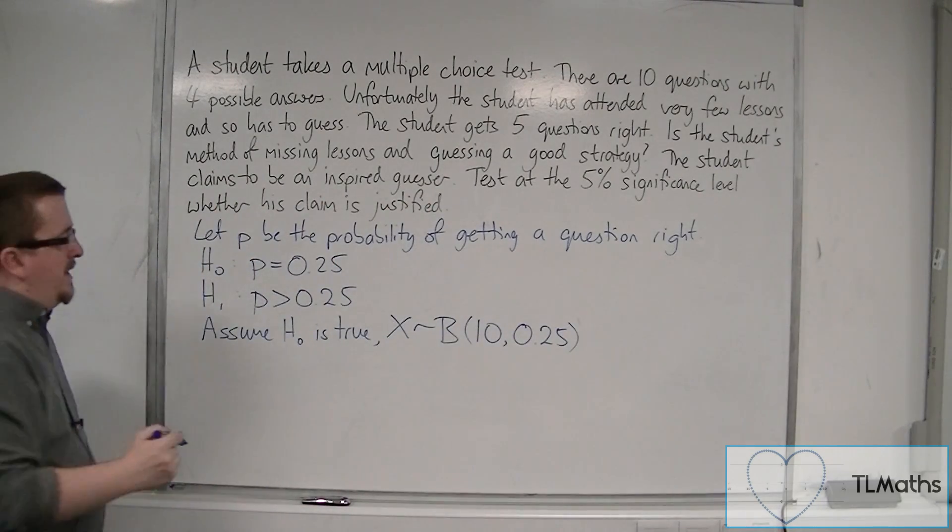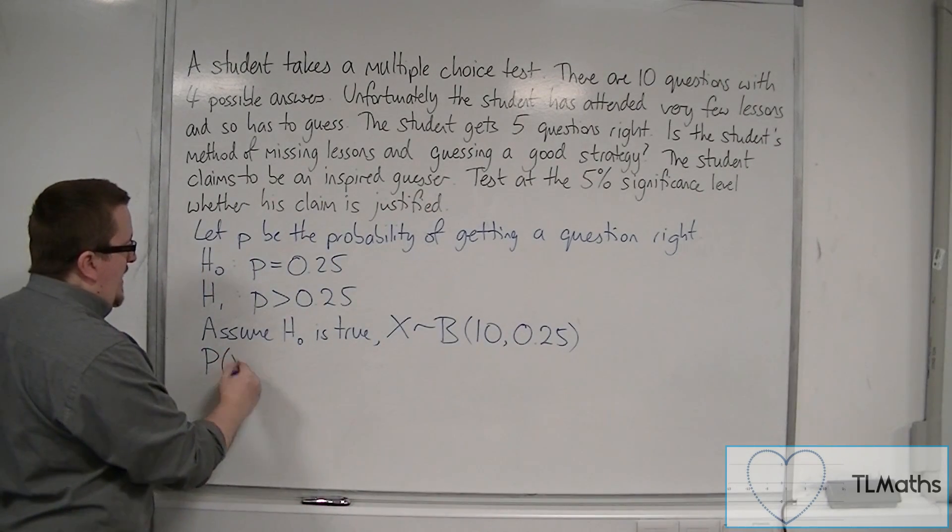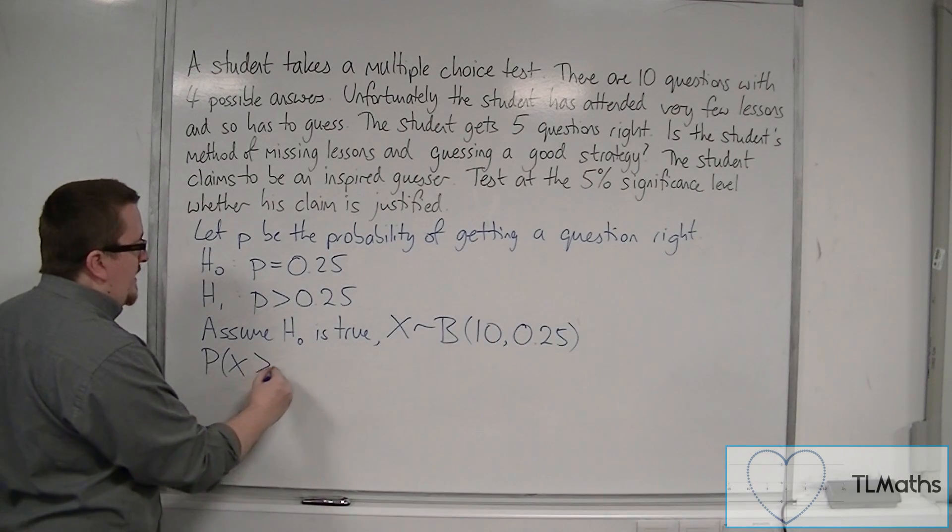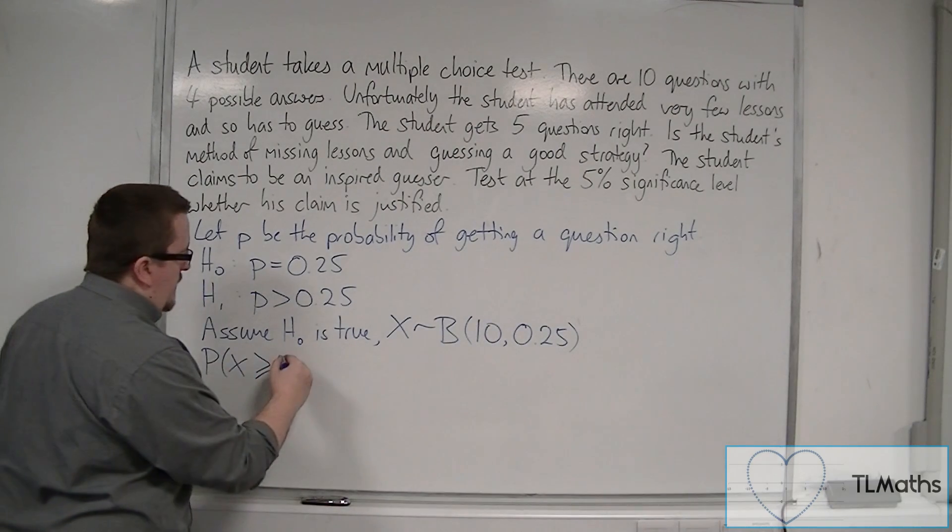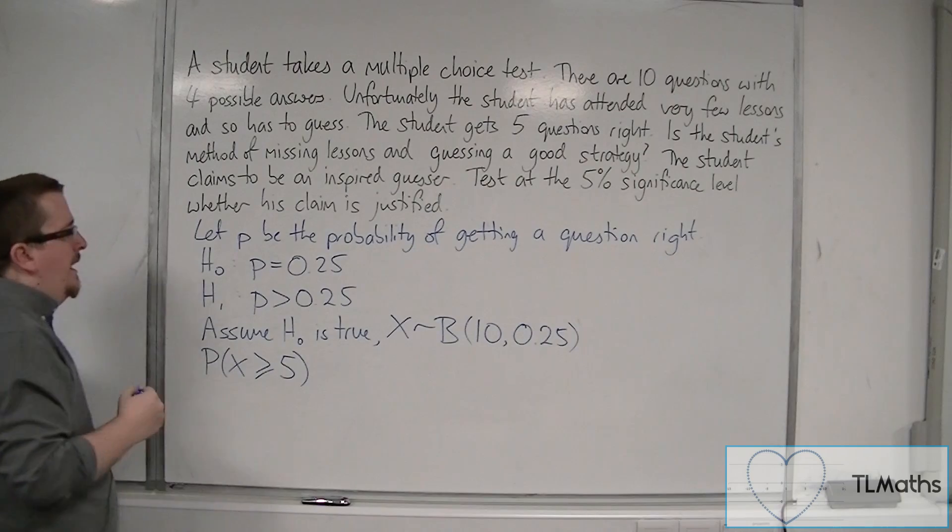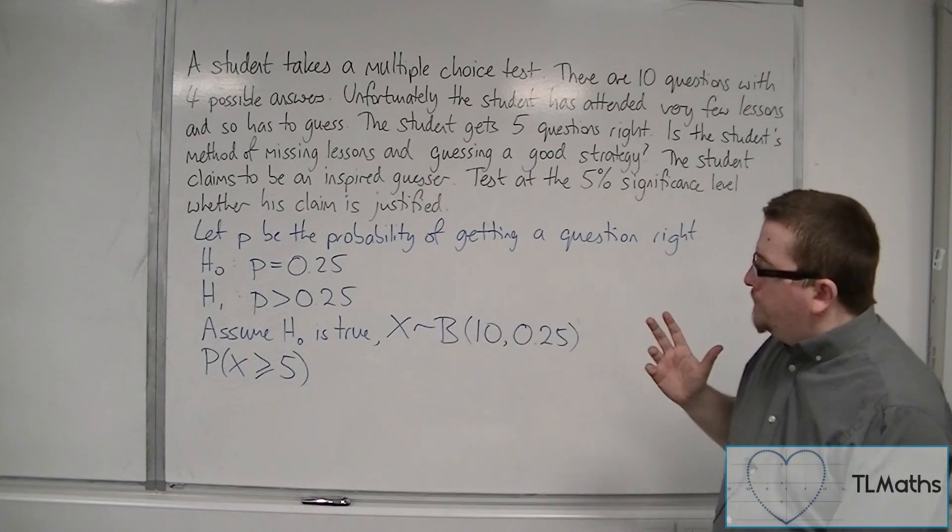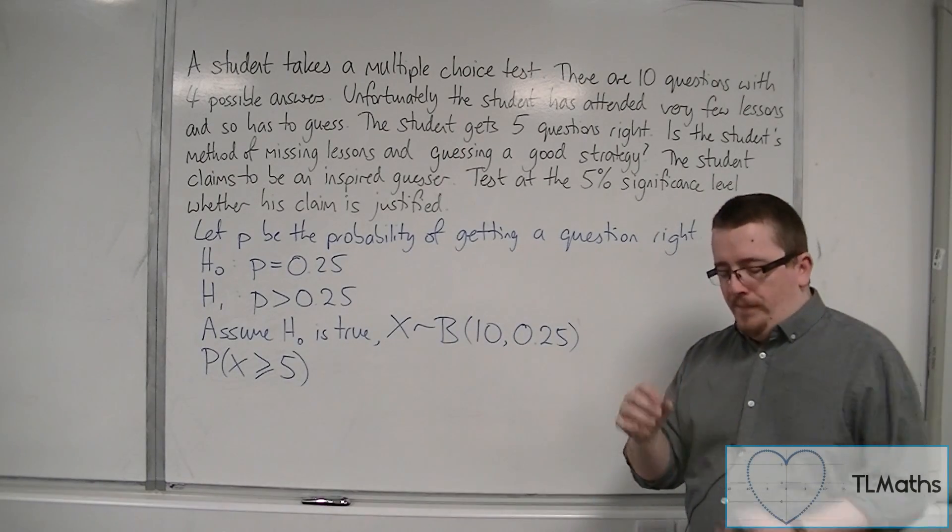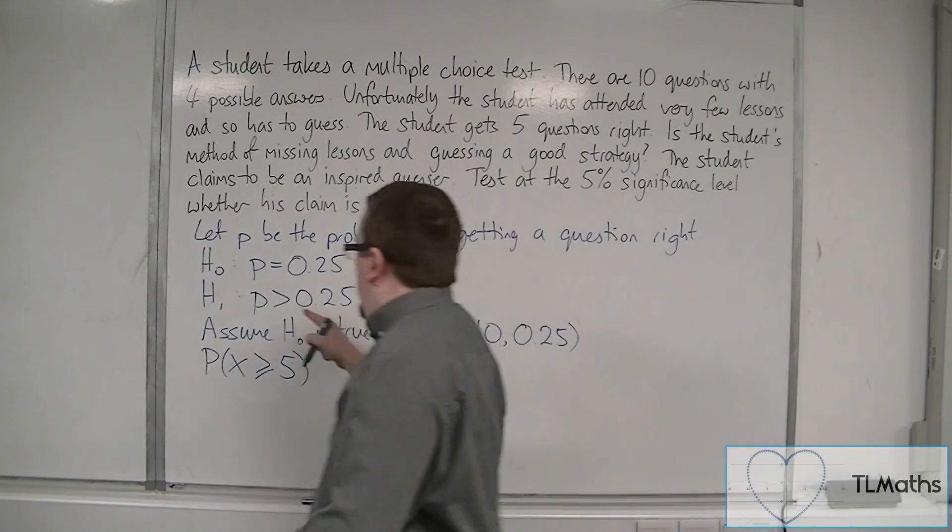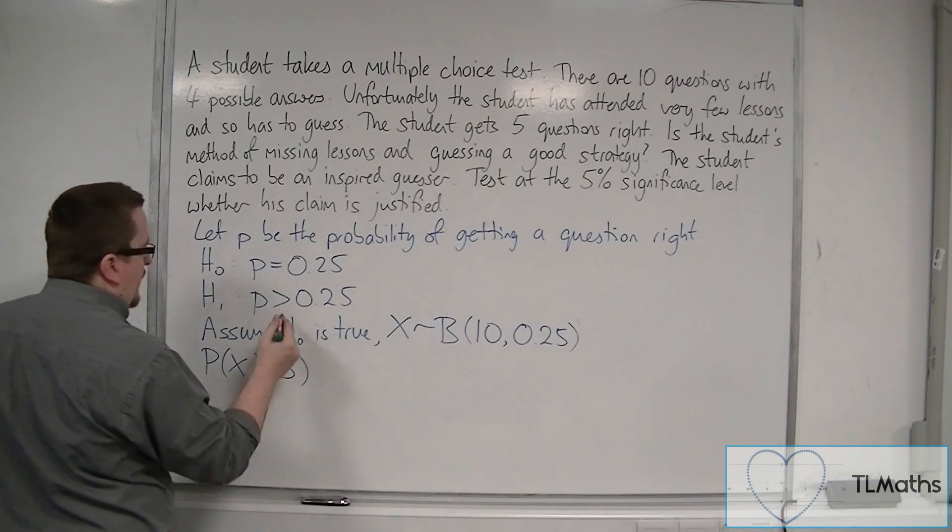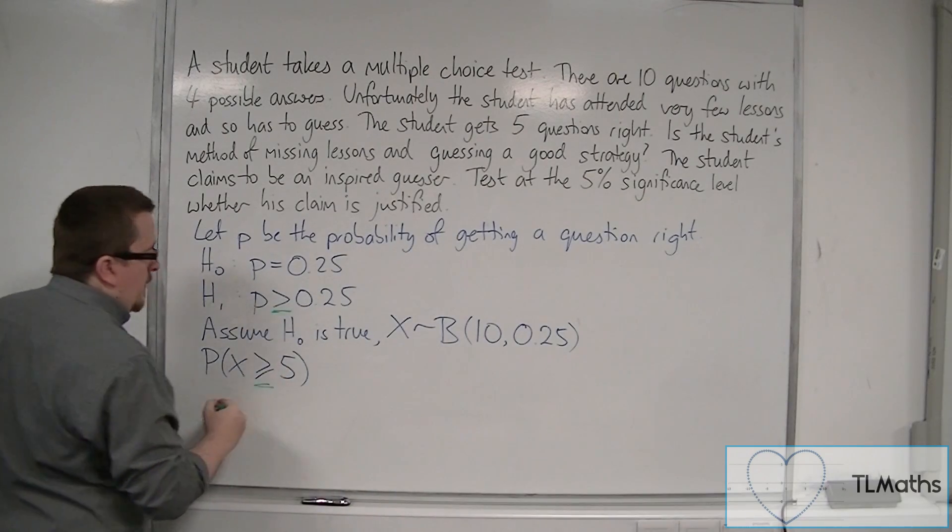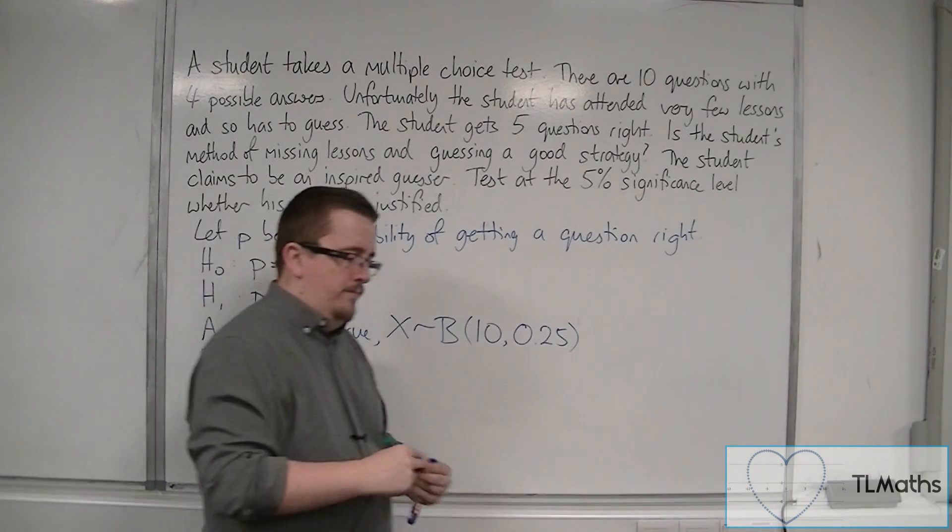So we want to calculate the probability that X is going to be greater than or equal to 5. Now, why do we want to do that? First off, this inequality symbol and this inequality symbol, as I've shown before, must be pointing in the same direction.